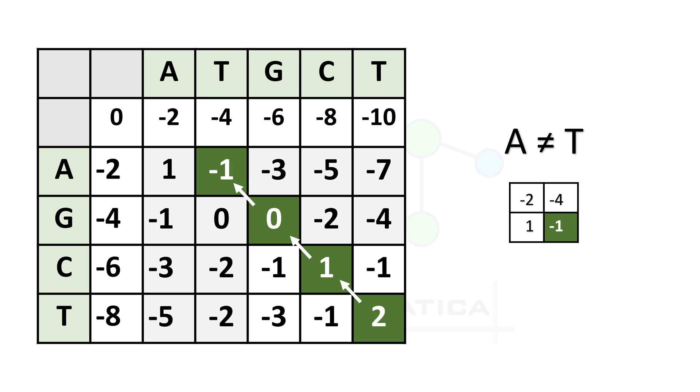But now we got the corresponding letters T and A, so it's a mismatch. We have to look for the highest valued neighbor. Here the neighbors are 1, minus 2, and minus 4. Among these three, 1 has the highest value, so we discard the remaining two and the traceback will proceed towards 1. Here again we got a match, A and A, so the traceback will go diagonally.